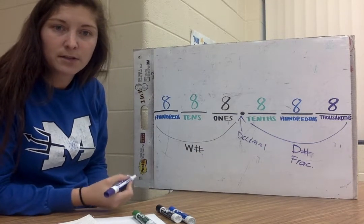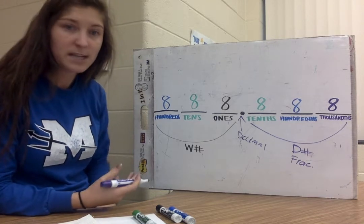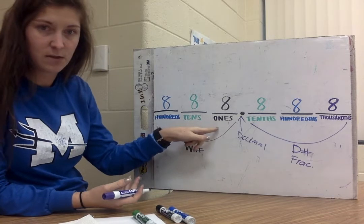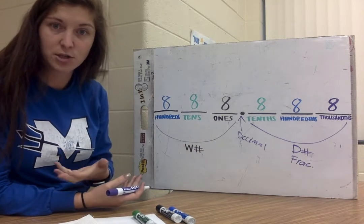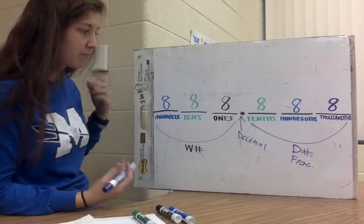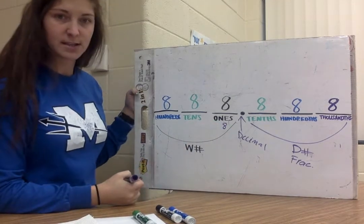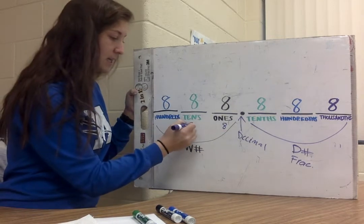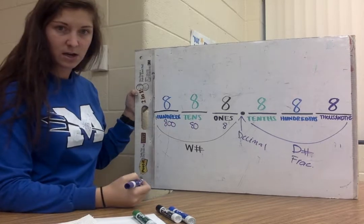When we talk about these numbers, the first thing that I want to talk about is understand the difference between the place and the value. The place is the location. There's an eight in the ones place. There's an eight in the tens place. The value is how much it's worth, so think about money. For the eight in the ones place, it has a value of just 8. For the eight in the tens, it has a value of 80. Eight in the hundreds, it has a value of 800.